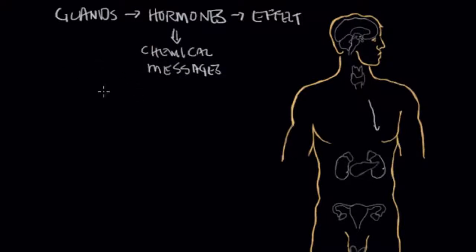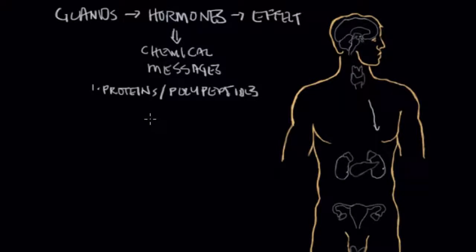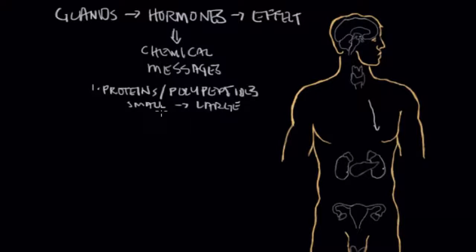The first class is proteins and polypeptides. Like any other proteins in the body, they're made up of amino acids. They can be really small — as few as three or so amino acids — all the way up to hundreds and hundreds of amino acids in a polypeptide chain. Typically, after you get about a hundred amino acids in a chain, you start calling it a protein, and that holds true for hormones as well.